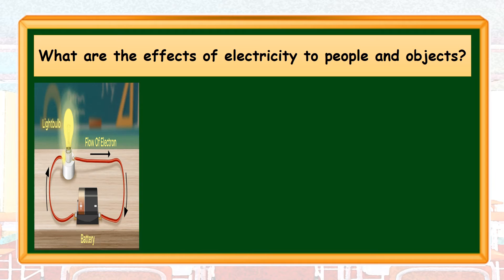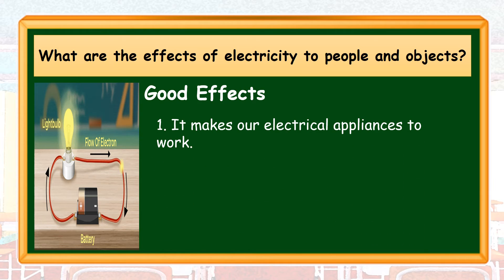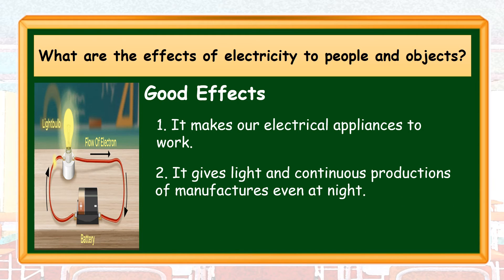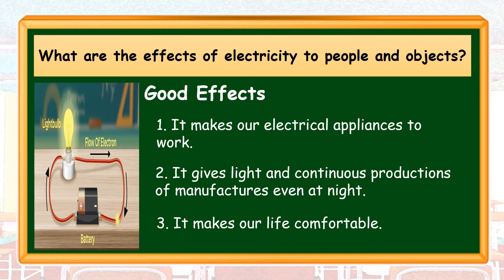From our previous lesson as well, we know that electricity is the flow of electrical power or charge. But what are the possible effects of electricity to us and to objects in contact with it? Let's find out the good effects. Number 1, it makes our electrical appliances work — TVs, radios, and computer sets at home will only work if there is electricity connected to the electrical sockets. Number 2, it gives light and enables continued production of manufacturers even at night. Call center companies and other companies that operate at night can do their tasks because of electricity. And number 3, it makes our life comfortable.